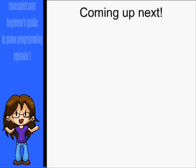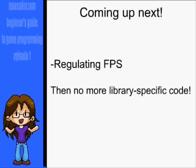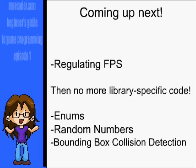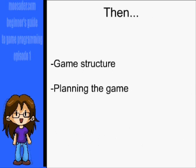That's it for now. Next is regulating frames per second, and then we're out of the library-specific code. After that, we'll review enumerations and random numbers, and then cover some basic bounding box collision detection. After that, we're going to cover game structure and planning, and then you should be ready to make your own pick and sticks. Thanks.